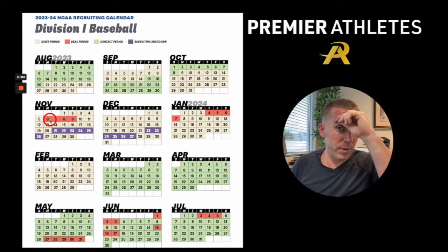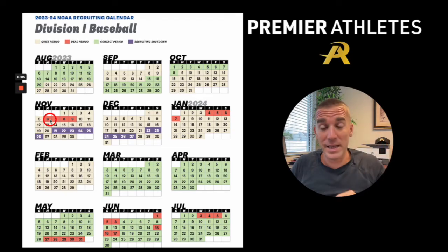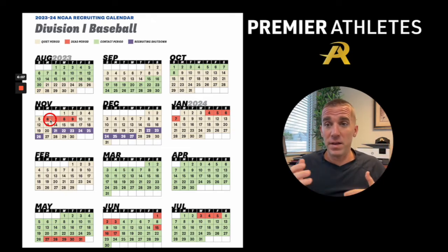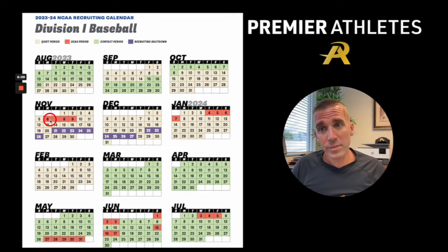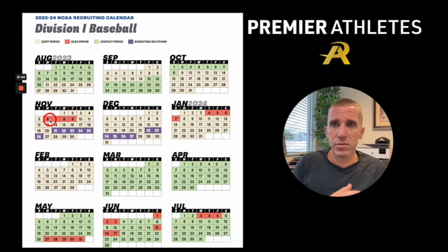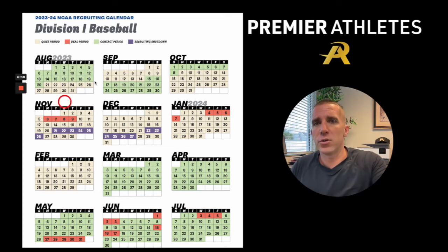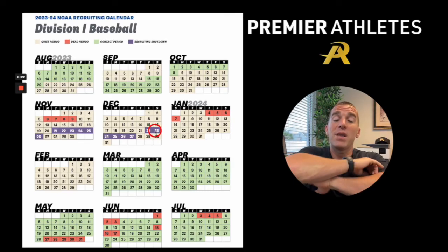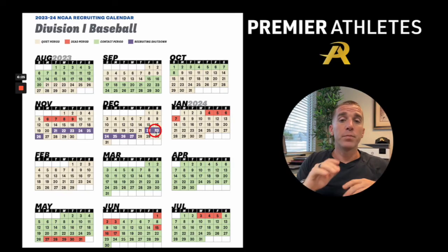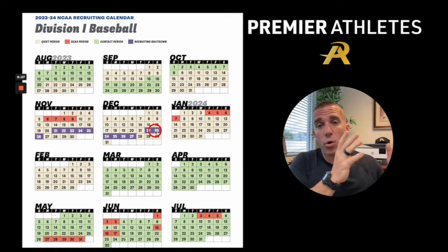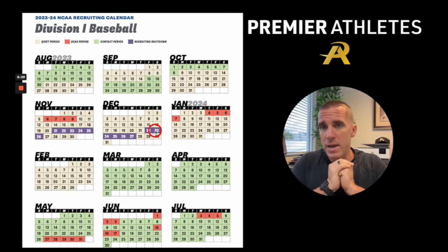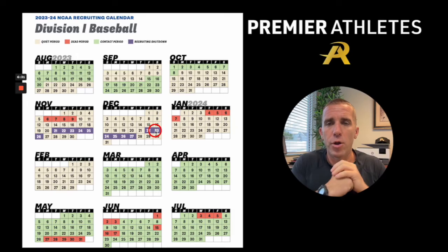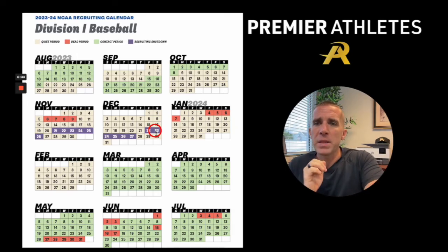The dead period — coaches can't have any face-to-face contact with you during this time. They can't have you on campus or watch you off their campus. And then the recruiting shutdown, shown in purple on the calendar — they can't have any recruiting contact at all: no phone calls, no texts, no face-to-face meetings on campus or off campus. Nothing can be going on during the recruiting shutdown.